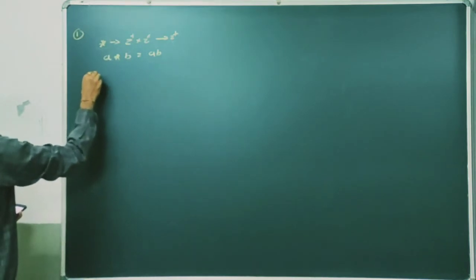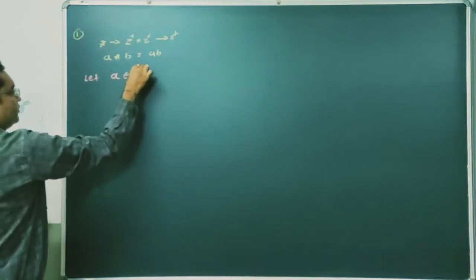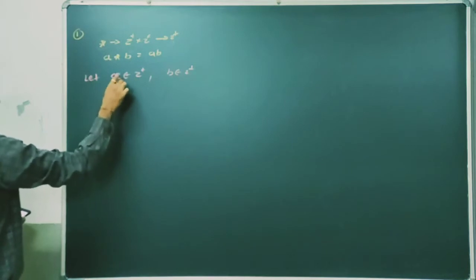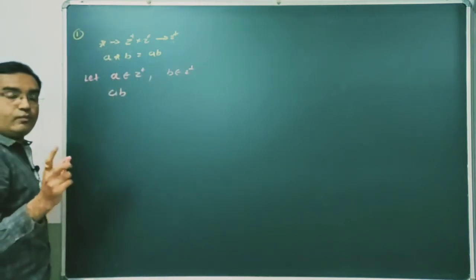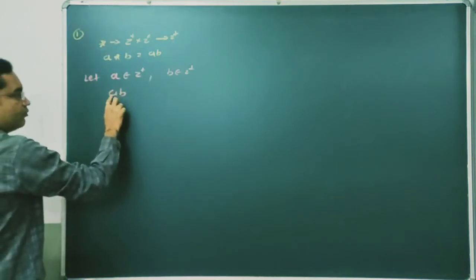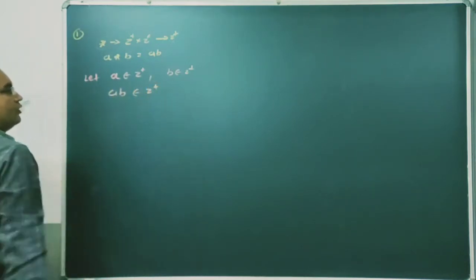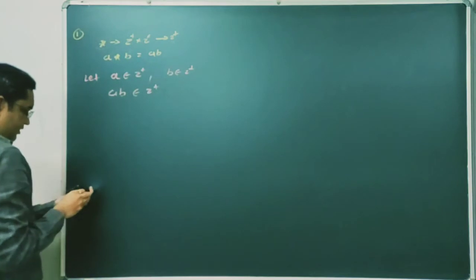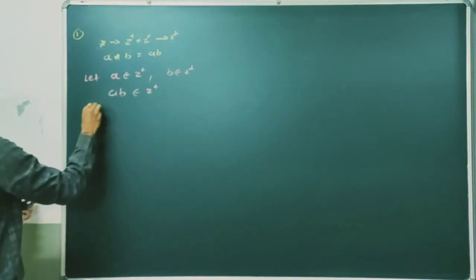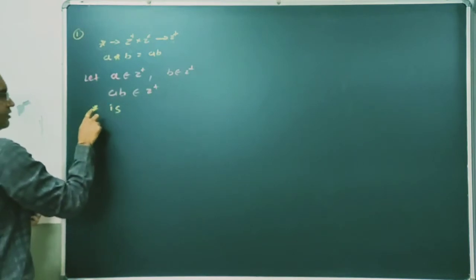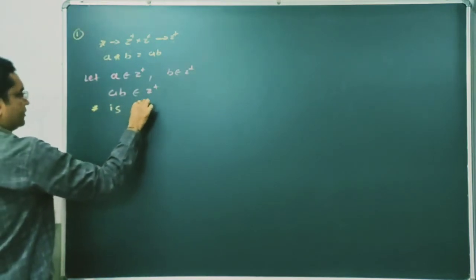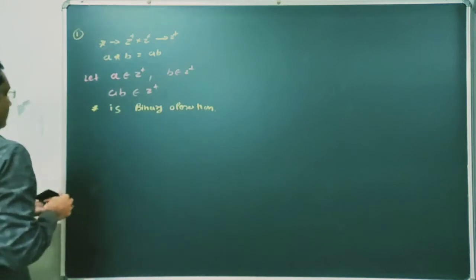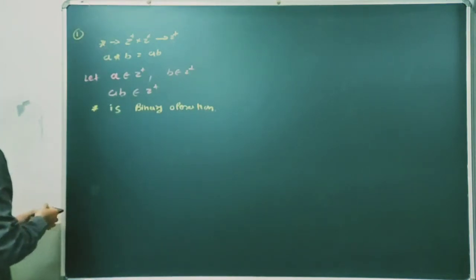If a ∈ Z+ and b ∈ Z+, Z+ is the set of positive integers. If we multiply two positive integers, the result will always belong to Z+. Therefore, a ∈ Z+ and b ∈ Z+ implies a★b ∈ Z+. Hence the given binary operation star is a binary operation.